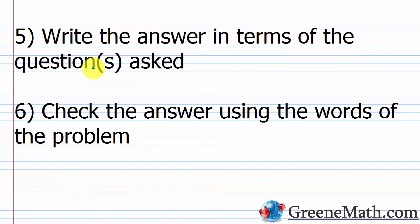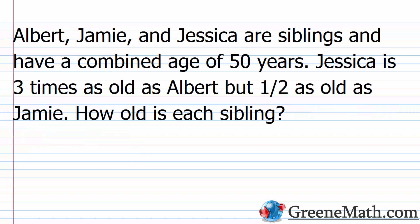Then we solve the equation, write the answer in terms of the question asked, and check the answer using the words of the problem—we always want to make sure the answer is reasonable. For age word problems, this is an extremely common type in algebra. This type of problem generally gives us the sum of the ages of family members, friends, or some group of associated people, and asks us to find their individual ages. That's the most common scenario.